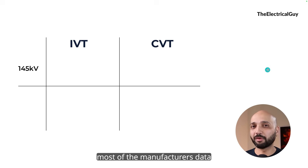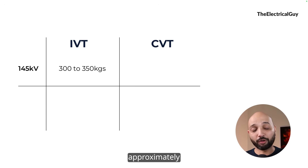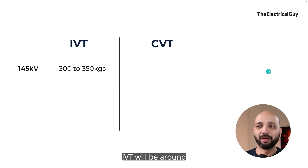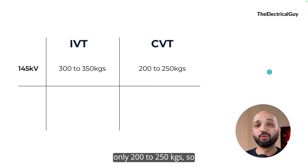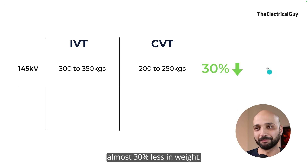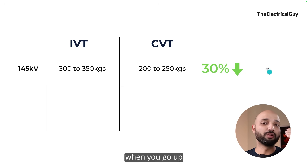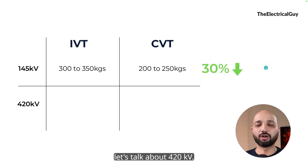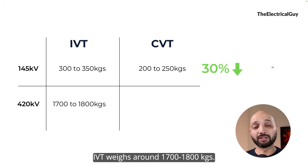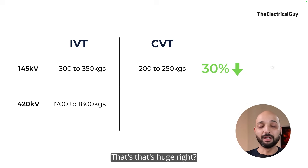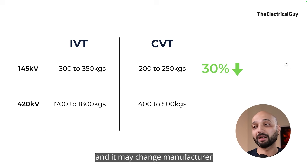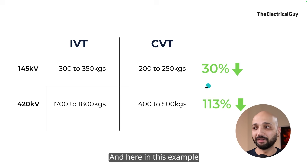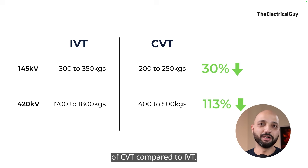Based on data from most manufacturers, a 145 kV IVT generally weighs around 300 to 350 kilograms approximately. Comparing that with a 145 kV CVT, the CVT weighs only around 200 to 250 kilograms — almost 30% less. This difference grows at higher voltage classes. For example, a 420 kV IVT weighs around 1,700 to 1,800 kilograms, whereas a 420 kV CVT weighs only about 400 to 500 kilograms — almost 113% less weight for the CVT compared to the IVT.